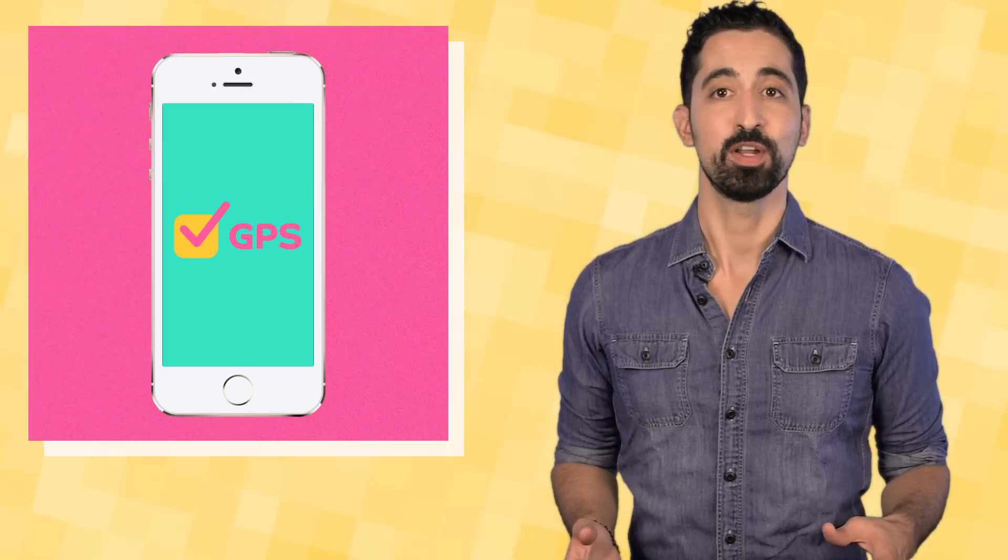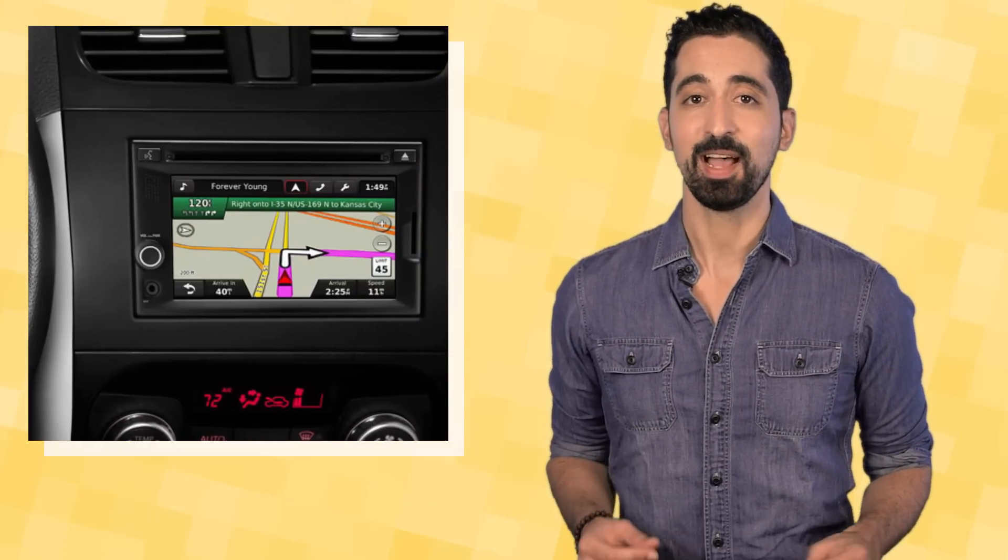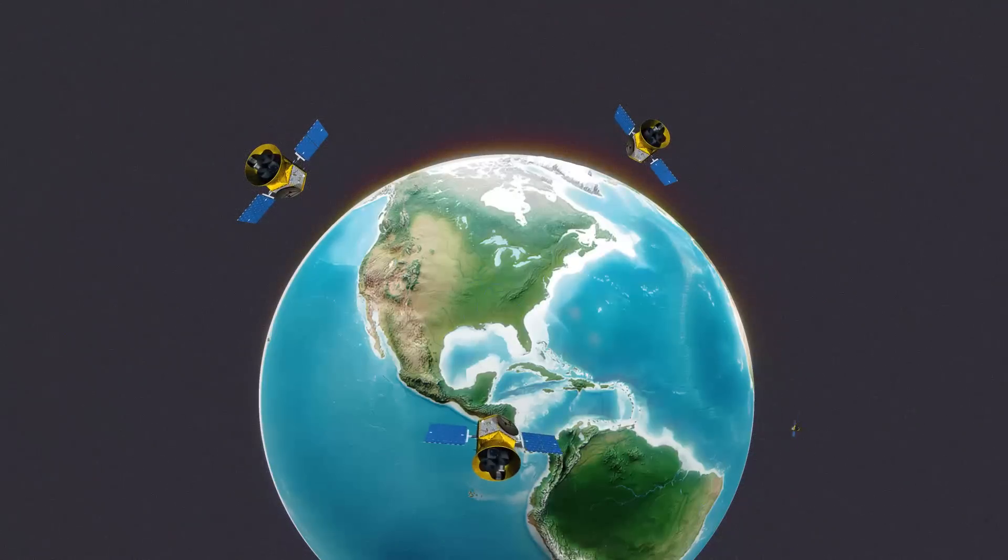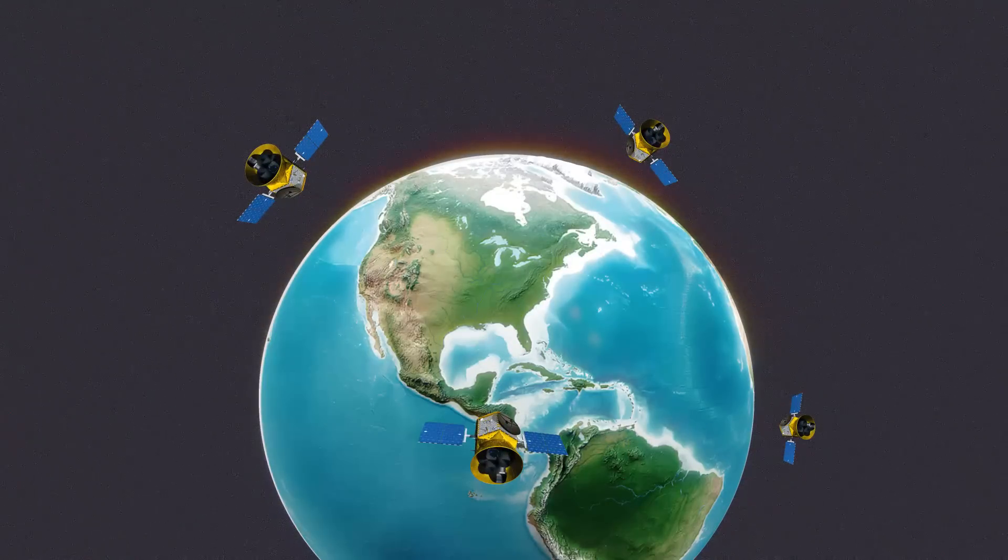GPS isn't just a feature on your iPhone or an inbuilt service in your car, it's actually the entire system of up to 30 satellites that were put into orbit by the US government to assist us in determining exactly where we are on Earth. GPS relies on the visibility of at least four satellites in the sky at all times from any position on Earth.